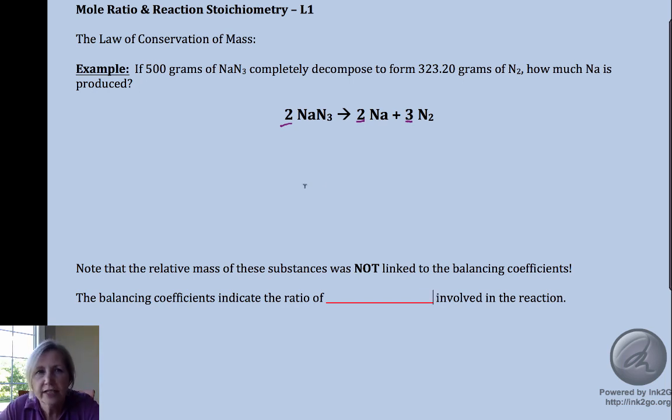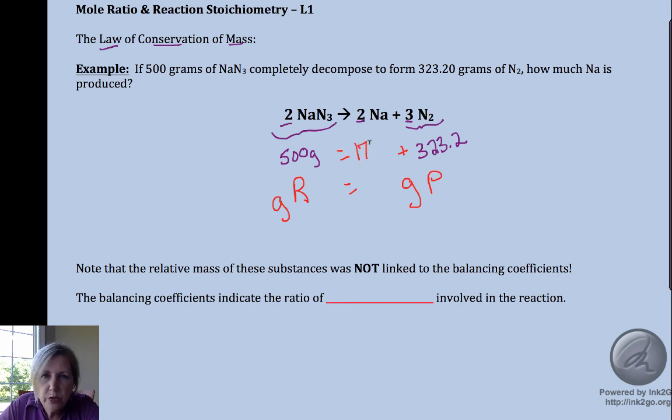To start with, I want to make sure that we can apply the law of conservation of mass. So if I take this sodium azide, 500 grams of it, and I decompose it to 323.2 grams of nitrogen, the law of conservation of mass tells me that my mass of reactant has to be equal to the sum of my masses of products. And so by subtraction we could find that our sodium was 176.80 grams. You can't create or destroy matter in this process.